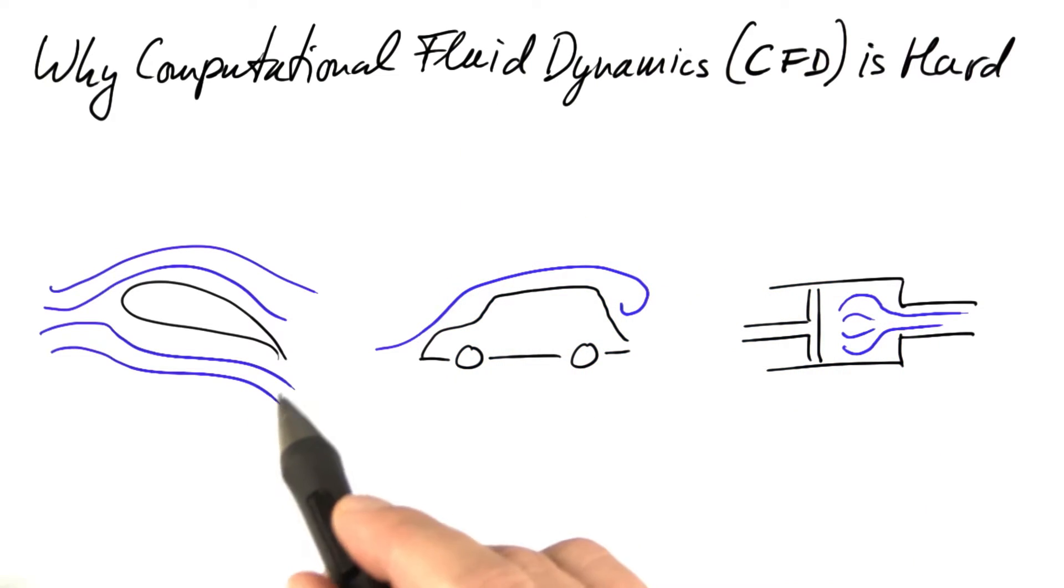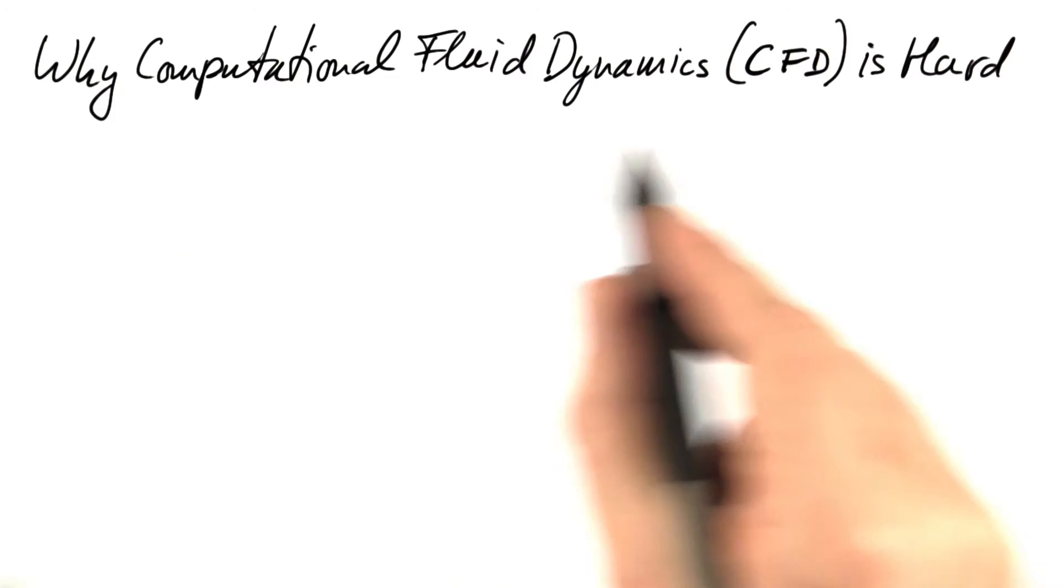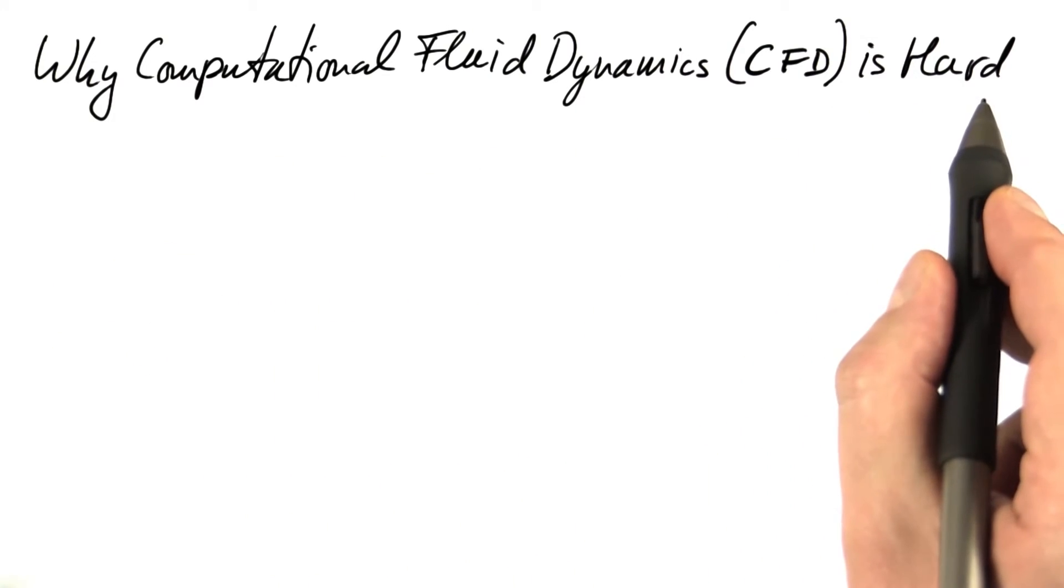For instance, to find the optimum shape of an airfoil or the optimum shape of a car body or to design hydraulic machinery. I've titled this section why CFD is hard, so now let's look into that.